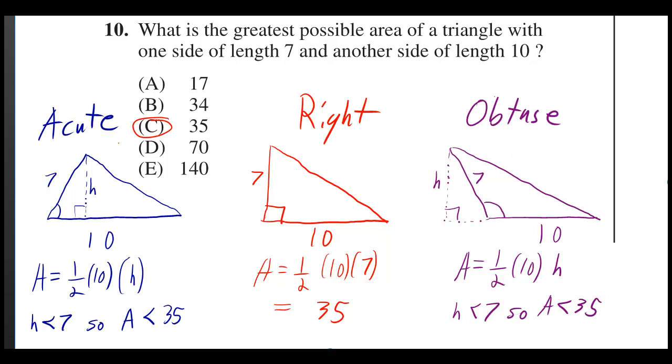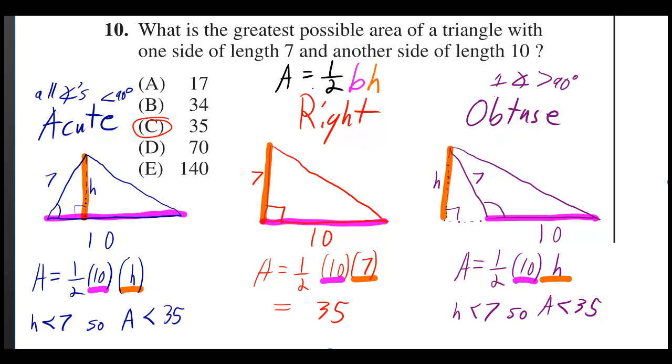You can have an acute triangle, you can have a right triangle, or you can have an obtuse triangle. The area of any triangle is one half the base times the height.